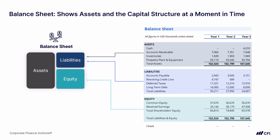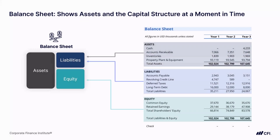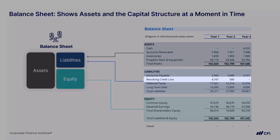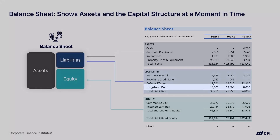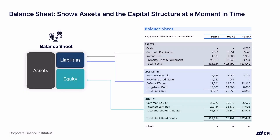We can see under assets that property, plant, and equipment is by far the largest asset for this particular company, and we can see roughly how that was financed — looking in liabilities, we see a revolving line of credit and long-term debt. In the equity section there's one class of shareholder in common equity. One of the most important parts of the balance sheet is the check at the bottom, highlighted in gold, which takes total assets and subtracts total liabilities and equity. In this course we're really going to focus on the importance of that check.